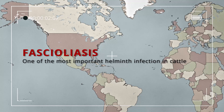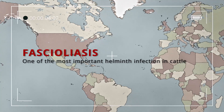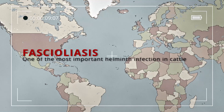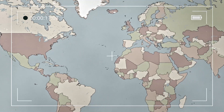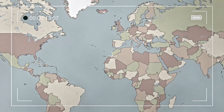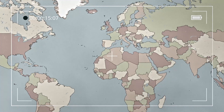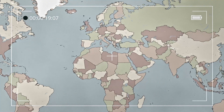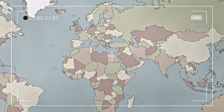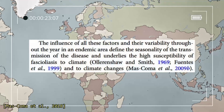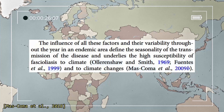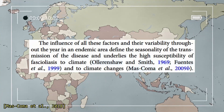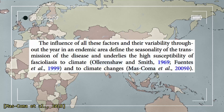Fascioliasis, the disease caused by Fasciola species, remains the most important helminth infection in cattle. However, human infections are becoming more prevalent, particularly in regions like South America and Asia, due to contaminated water and consumption of aquatic plants. Recent studies have also shown that climate change is affecting the geographic distribution of Fasciola, with warmer temperatures facilitating the spread of the parasite to newer regions.